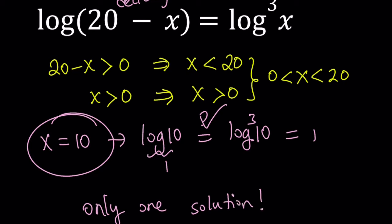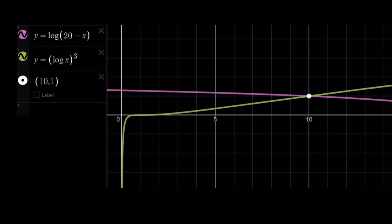And that happens to be x = 10. Great. Let's go ahead and take a look at the graph and see what that looks like. So when we graph both of these functions together, it should give us a good idea. Like I said earlier, log(20 - x), which is the pink or purple one, is decreasing.